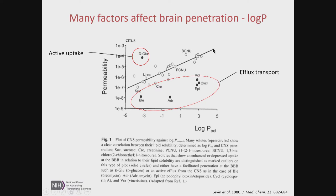But we see something else as well. D-glucose, a very hydrophilic molecule that does not diffuse across lipid bilayers — sometimes used as a negative control for diffusion experiments — has higher uptake into the brain than you would expect based on its log P. We now know that glucose uptake transporters are highly expressed at the blood-brain barrier to facilitate maximal absorption of glucose into the brain for energy generation. Conversely, a number of molecules in this early paper — bleomycin, adriamycin, epirubicin, cyclosporine, vincristine — had much lower uptake into the brain than anticipated based on their log P alone.